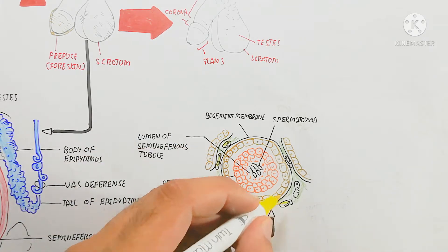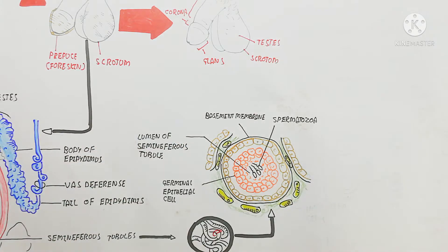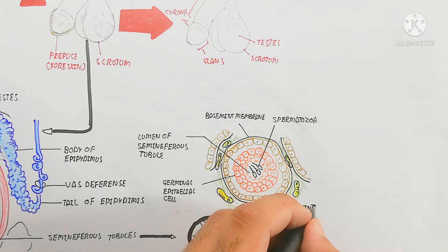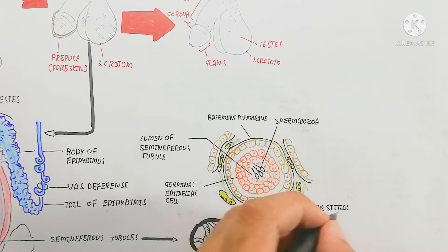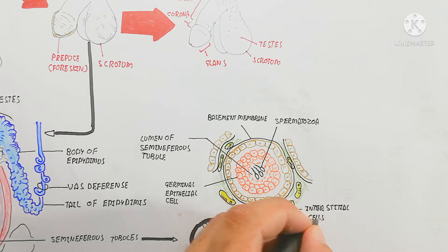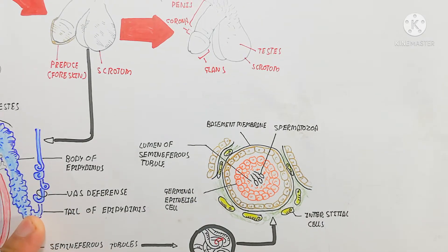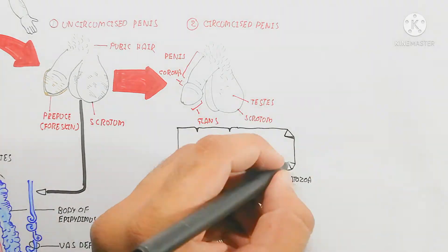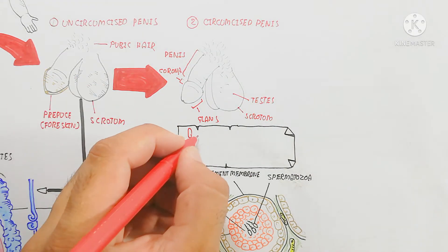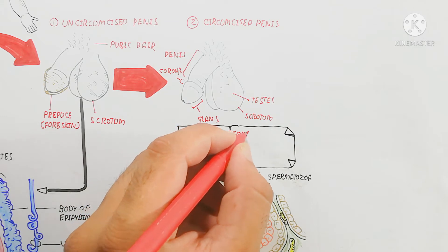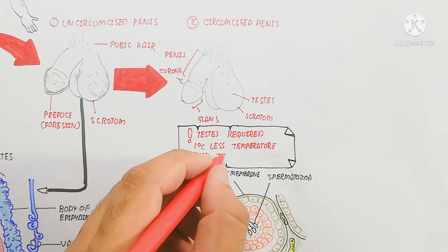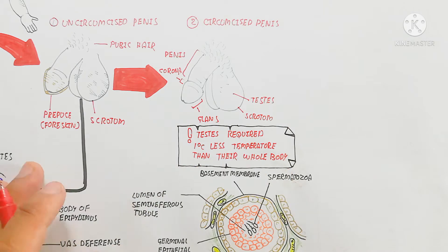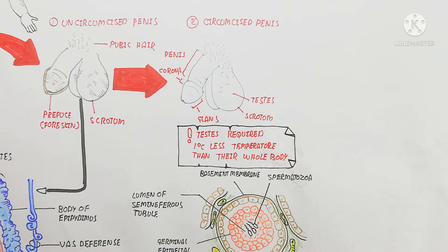The spermatozoa are not yet mature at this stage, so the sperm will mature in the epididymis. The yellowish-green interstitial cells produce interstitial fluid and also produce testosterone by activation of the pituitary gland, which stimulates testosterone production to promote further growth of the sperm. The testis requires about 1°C less temperature than the whole body, which is why it hangs outside the body. During hot weather it hangs lower, while during cold weather it moves upward.